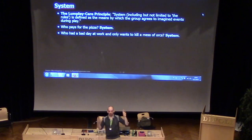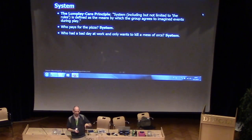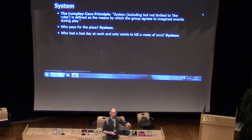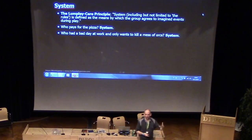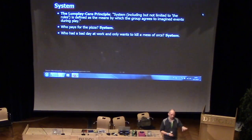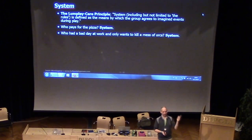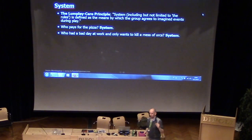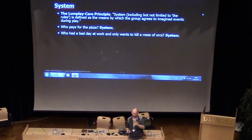I would argue that system is how credibility and authority get apportioned. There's a principle in tabletop role-playing game design called the Lumpley Care Principle. Vincent Baker is the 'Lumpley,' and 'Care' is Emily Care Boss, whose game I'll discuss later. The definition: system — including but not limited to the rules — is defined as the means by which the group agrees on imagined events during play. So system includes who's buying pizza this week, who needs to just kill some orcs tonight. That's all system.